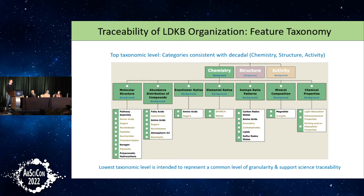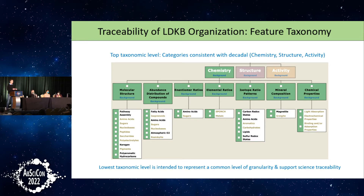The feature taxonomy is pretty simple to understand. It starts with the three categories of potential biosignatures identified in the decadal: chemistry, morphology or structure, and activity, and then seeks to break them down to a taxonomic level at which you have some common level of granularity among all the things you're comparing. The idea is to support an apples-to-apples comparison among all of the different signs of evidence we might seek as evidence for life — roughly corresponding to the level of a science investigation in a science traceability matrix.